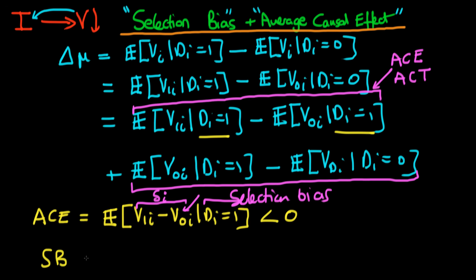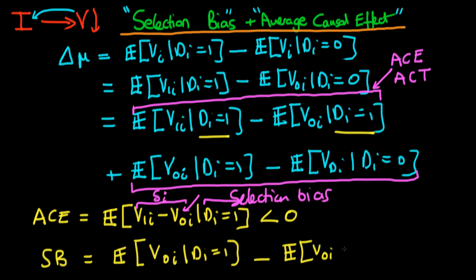What about the selection bias effect? I'll write it down as it is, because I can't combine these two terms since they're conditioned on different levels of infrastructure spending. So I've got the expected level of v0i given that di equals 1, minus the expected level of v0i given that di equals 0. This represents the selection effect because we expect that those states which did receive infrastructure spending would have had a greater level of violence — even had they not received it — than those states which ultimately didn't receive infrastructure spending.